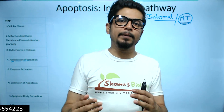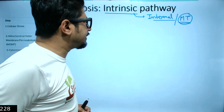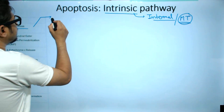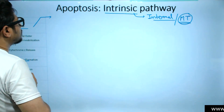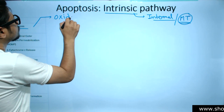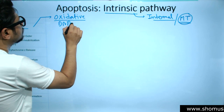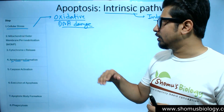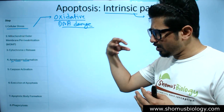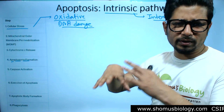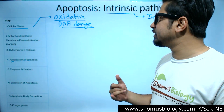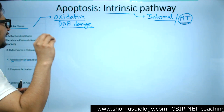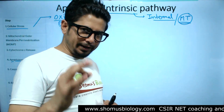The very first thing we are going to discuss is cellular stress. When we talk about cellular stress, there can be different types — the stress can originate internally. That stress can be oxidative stress or DNA damage. These are the two major types of stress. DNA damage can occur by any external means like radiation or anything that ultimately leads to DNA damage. These internal stress factors will trigger the activation of the mitochondrial-mediated intrinsic pathway of apoptosis or cell death.